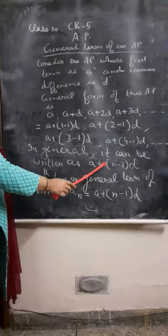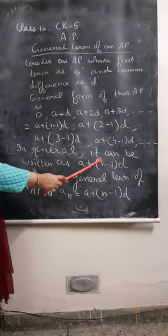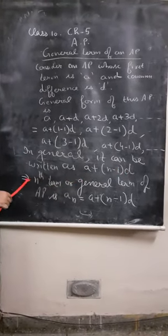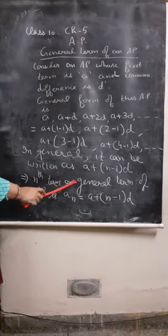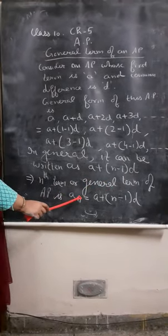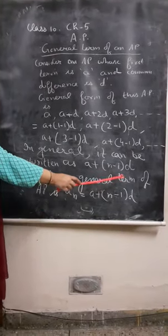In general we can say that it can be written as A plus N minus 1D. Where A is the first term, N is the position of the term and D is the common difference. It implies Nth term or general term of an AP is AN which is equal to A plus N minus 1D.